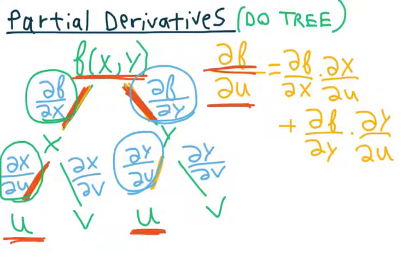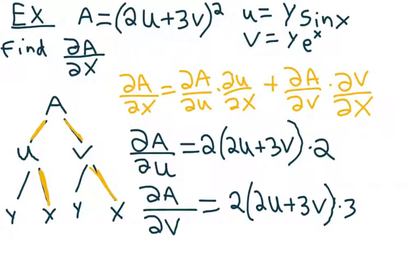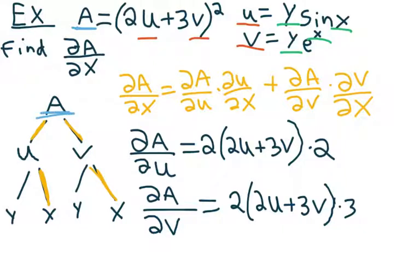This might seem a little complicated, but let's look at an example. We have a = 2u + 3v², and we're given u = y sin(x) and v = ye^x. Our a is given in terms of u's and v's, and our u's and v's are given in terms of y's and x's. We're going to write down a as the top of the tree, then it branches down into u's and v's, and then the u's and v's branch down into y's and x's.